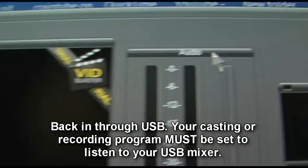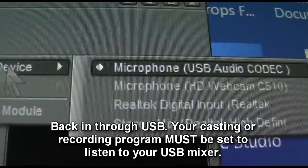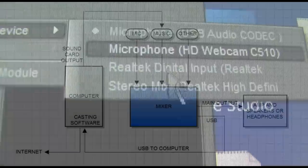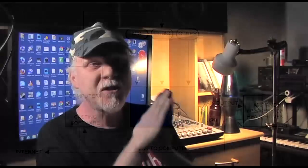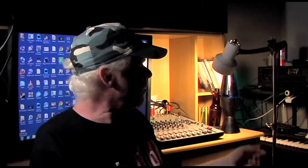Out of the USB jack of the mixer you go back into your computer, and you tell your podcasting or broadcasting software to listen to the USB port and use that as the output out onto the internet. It takes a little hands-on work to get it all going, but just look at that diagram — that's exactly how to do it. Remember to make sure the music is coming out of the sound card, not the USB, because once you hook up the USB device your computer will offer to send sound out the USB port, effectively using the mixer as a sound card.